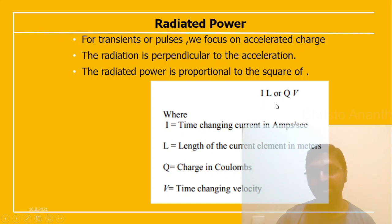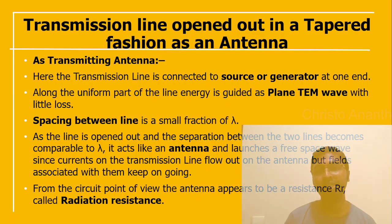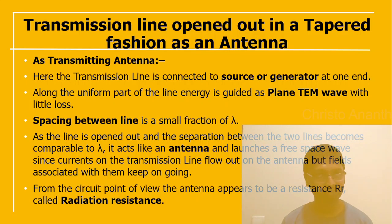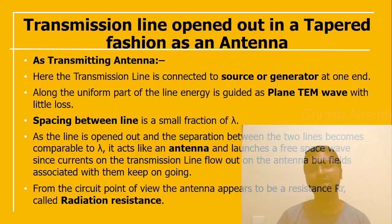As a transmitting antenna, the transmission line is connected to a source generator at one end. Along the uniform part of the line, energy is guided as a plane transverse electromagnetic wave with little loss. The spacing between the lines is a very small fraction of wavelength λ. As the line is opened out and the separation between the two conductors becomes comparable to λ, it acts as an antenna radiating free-space waves. From a circuit point of view, the antenna has a radiation resistance R_r.